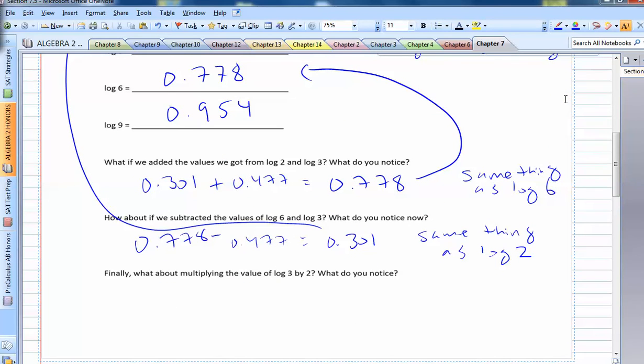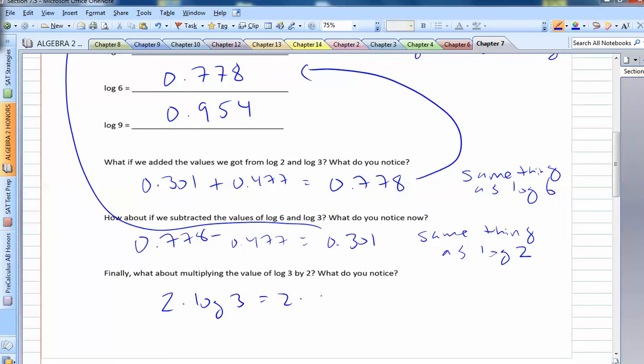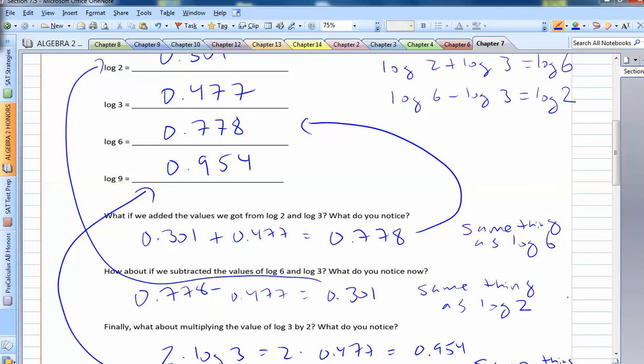And there's one more thing we're going to look at. What about multiplying the value of log 3 by 2? Well, if I do 2 times log 3, I wind up getting 2 times .477, which will be .954. Oh. Well, that's the same thing as log 9. So 2 times log 3 had equaled log 9.